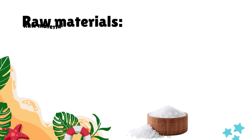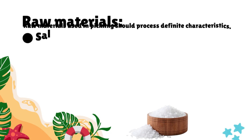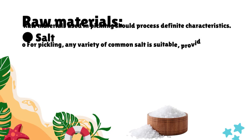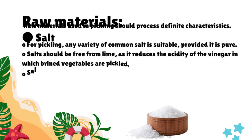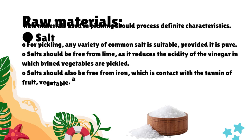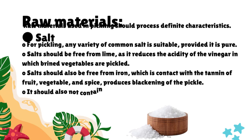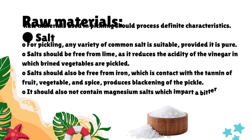Raw materials used in pickling should possess definite characteristics. For salt: any variety of common salt is suitable, provided it is pure. Salt should be free from lime, as lime reduces the acidity of the vinegar in which brined vegetables are pickled. It should also be free from iron, which in contact with the tannin of fruit, vegetable, and spice produces blackening of the pickle. It should not contain magnesium salts, which impart a bitter taste to the pickle.